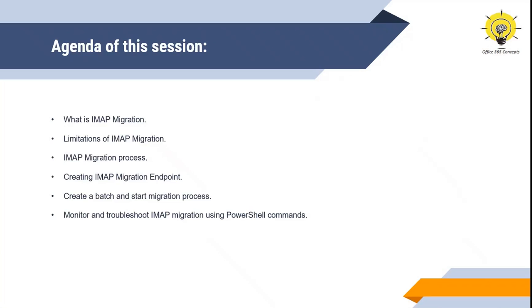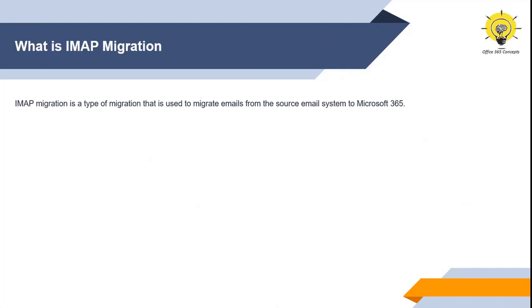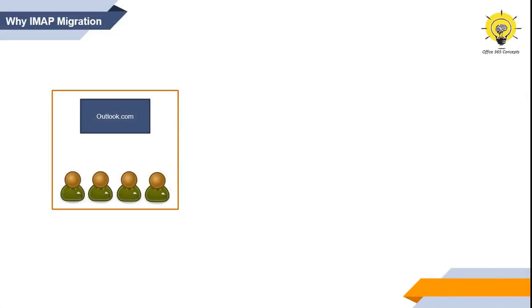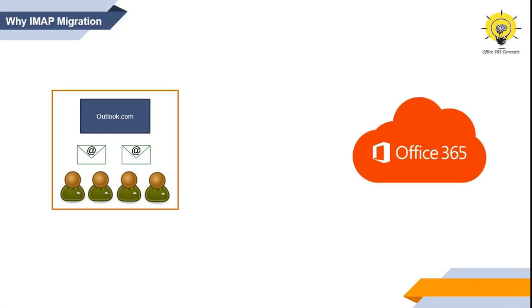So first, let's understand what is IMAP migration. IMAP migration is used to migrate emails from the source email system to Office 365. Let's assume you use Outlook.com to manage your emails. The users of your organization use Outlook.com to send and receive emails, so that means Outlook.com is the email provider for your organization. Now let's say you decided to move to Office 365. You want to use Office 365 services and you want Exchange Online to host your mailboxes and the contents of the mailboxes.